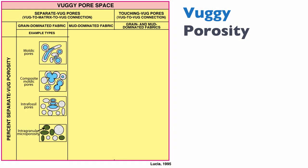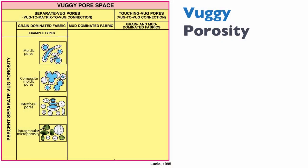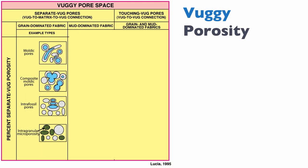For grain-dominated fabric with separate VOGS, Lucia recognizes moldic pores, composite moldic pores where several molds coalesce together — which is what you would traditionally call a vug in the Choquette and Pray classification — as well as intra-fossil pores and intra-granular microporosity. All of these pore types are effectively isolated, so they don't contribute massively to permeability.